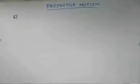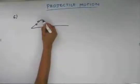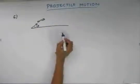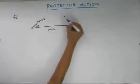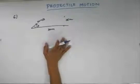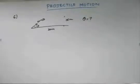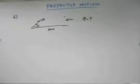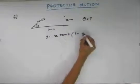The sixth problem is also a similar problem. A particle is projected from the ground with a velocity of 20 meters per second at an angle theta. At some instant, the particle has already covered a horizontal displacement of 20 meters and a vertical displacement of 15 meters. We are asked to find the angle of projection, theta. Since we are given vertical and horizontal displacement, we use the equation of trajectory: y equals to x tan theta times (1 minus x by R).